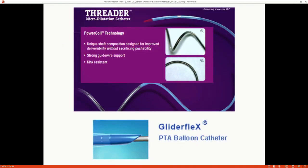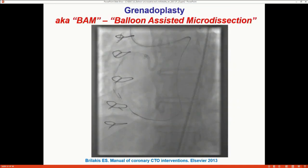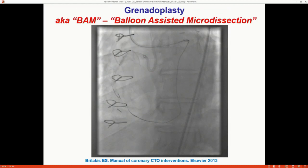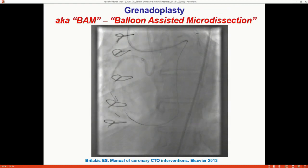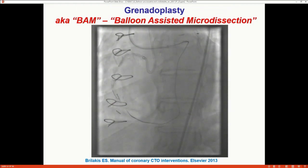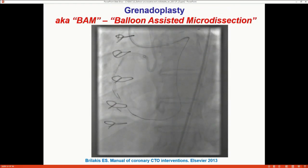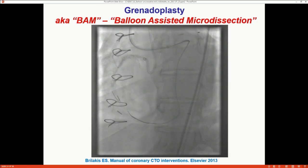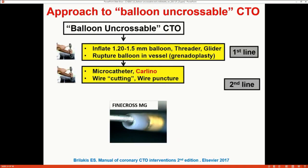The threader is a microcatheter combined with a balloon and is very crossable. There is also the glider balloon with a beveled tip that can sometimes navigate challenging lesions. For grenadoplasty, you can see what happens when the balloon ruptures — contrast goes into small branches. Make sure you use a small balloon so you don't cause other problems.